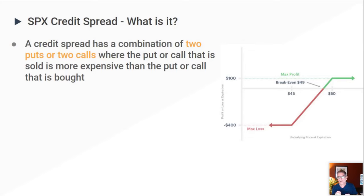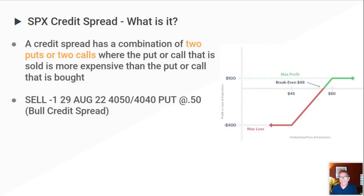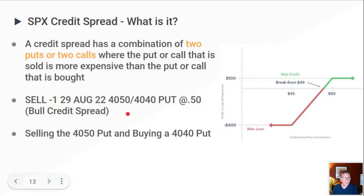What you're doing is actually selling the trade before you buy it. You're selling one position and buying the other, and the one you're selling is more expensive — so you get a credit when you put on the trade. In thinkorswim with TD Ameritrade, for example, you're selling one contract expiring August 29, '22 — the 4050 put, buying the 4040 put. It's called a bull spread and you receive 50 cents on that trade times the multiplier of 100, which equals $50.